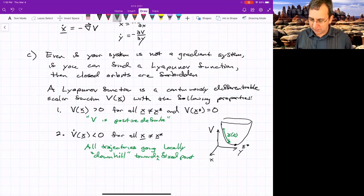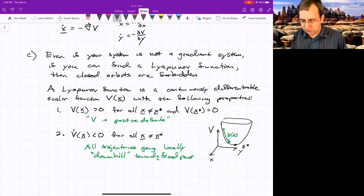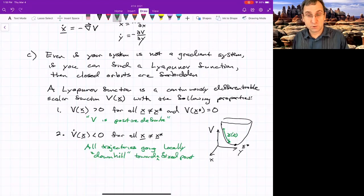So the intuition is that all trajectories move monotonically down the graph of this V towards a fixed point. Now there's a drawback to this. There's no systematic way to construct Lyapunov functions. Lyapunov functions are used in the study of control theory, nonlinear control theory. But again, there's that drawback. There's no systematic way to find them. It usually requires some inspiration and guessing.